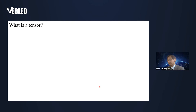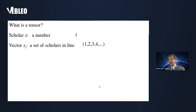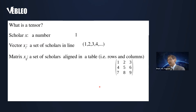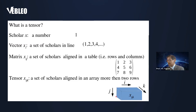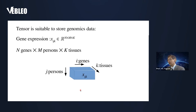I would like to explain what a tensor is, because possibly the audience is not familiar with it. A scalar is just a number, a vector is a set of scalars in a line, and a matrix is a set of scalars aligned in the form of a table — rows and columns. A tensor is scalars aligned in an array of more than two dimensions. For example, if the tensor has three indices i, j, k, it can be formatted as a rectangular box where each dimension corresponds to one index.